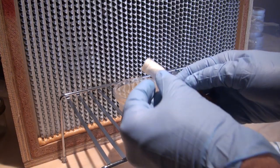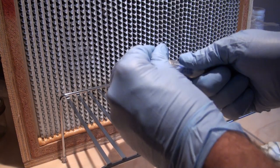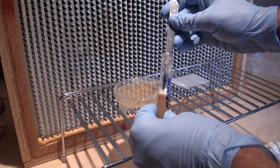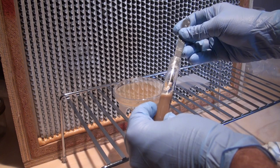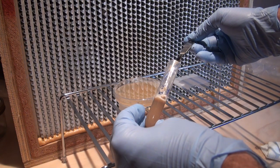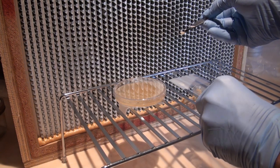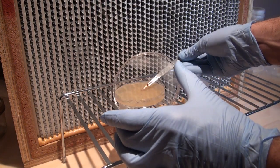You can also do a similar process with culture slants. Using your scalpel, dig out a piece of the culture and place that on your dish as well.